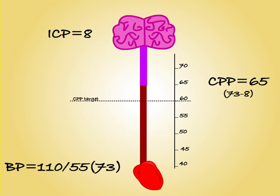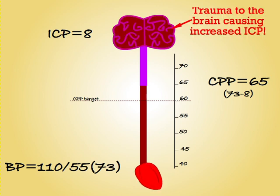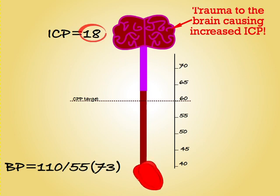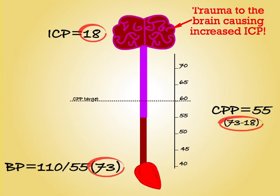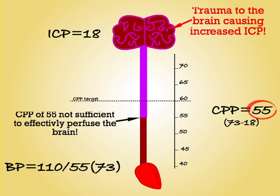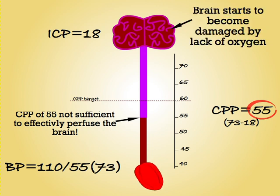For a patient with a normal blood pressure and normal ICP, maintaining CPP is generally not a problem. However, if the patient suffers a head trauma and their ICP increases — ICP has now increased to 18 — the patient's current blood pressure is no longer great enough to overcome their ICP and hit the CPP target of 60. The brain will be underperfused and start to suffer from ischemia unless we do something.